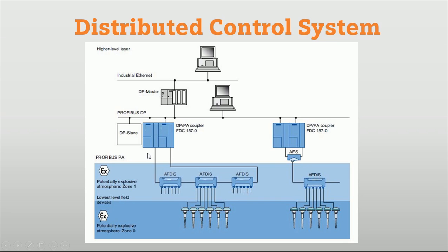The AFD-IS (active field distributor IS) is used for potentially explosive areas — here we have Zone 0 and Zone 1. Based on the zone, we select the appropriate field devices, all connected with the active field distributor. The AFD is connected in a ring configuration so that when any communication link fails, the AFD can carry information via the second link to the automation station. The AFS active field splitter is used for making redundancy with the coupler, so when a coupler fails, data can be sent to the automation station or DP master via the second direction.